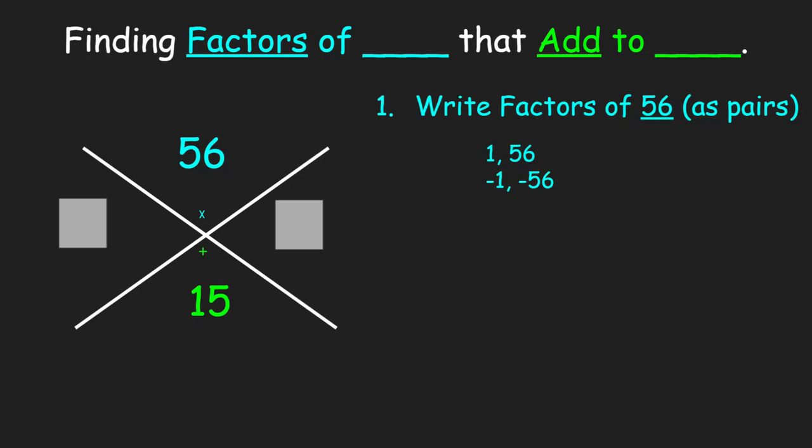If you struggle with writing factors, just take out your calculator and start dividing, starting with 1 and go down the list. If you get a number with a decimal or a fraction, then it is not a factor. We want them to go in evenly. So 2 does go into 56, so we get 2 times 28 or negative 2 times negative 28 that gives me 56. 3 does not go into 56 evenly. The next number that does is 4, and we have 4 and 14 or negative 4 and negative 14.